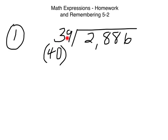But remember, we're multiplying it by 39. We're just thinking about it as 40 to make it easier to figure out what will go into it. So if 7 times 40 is 280, 7 times 39 would be 273, which is 7 less than 280.